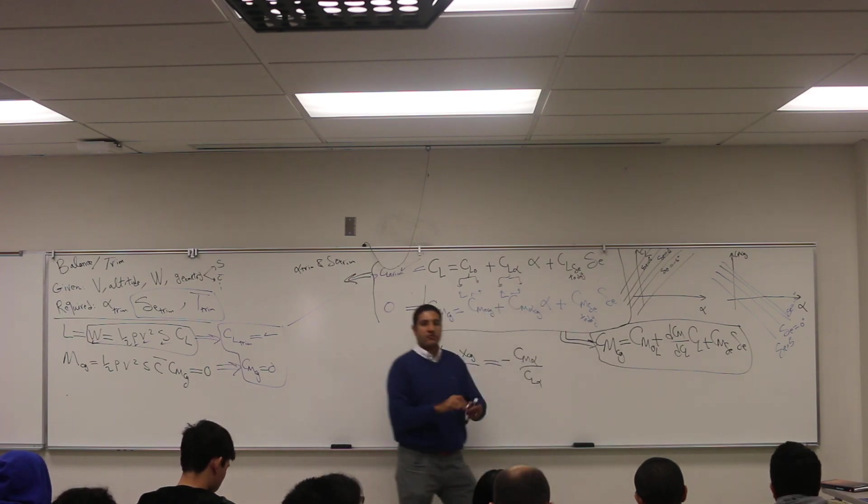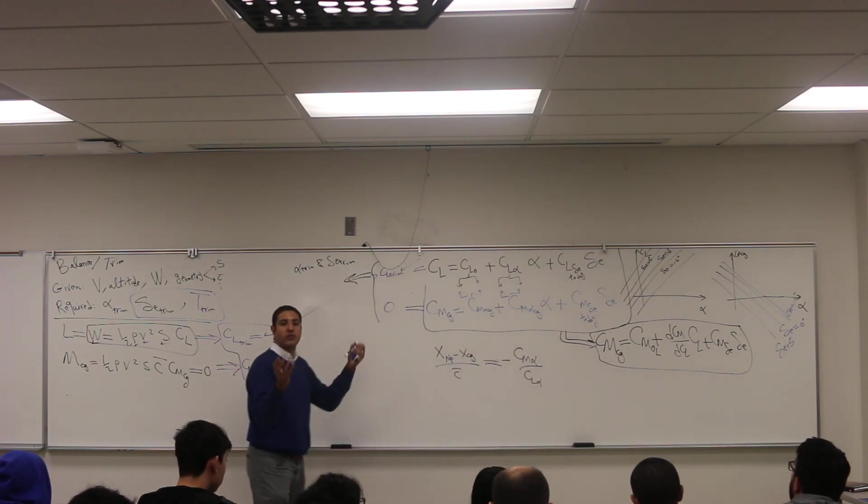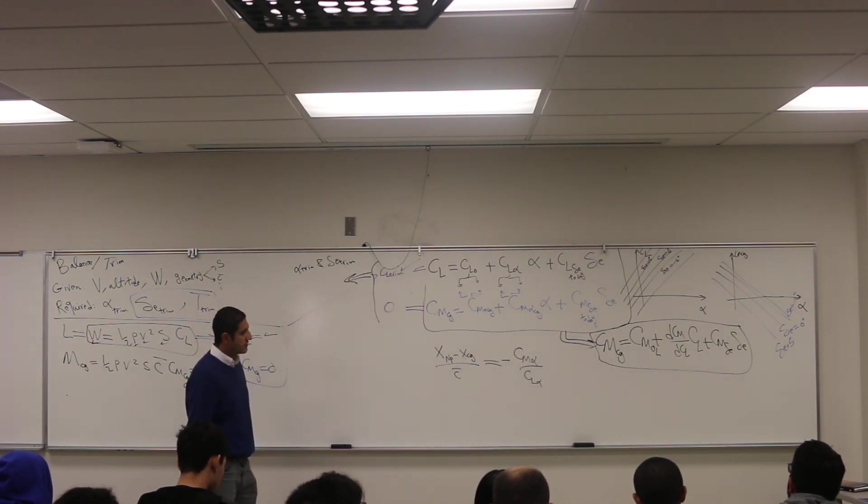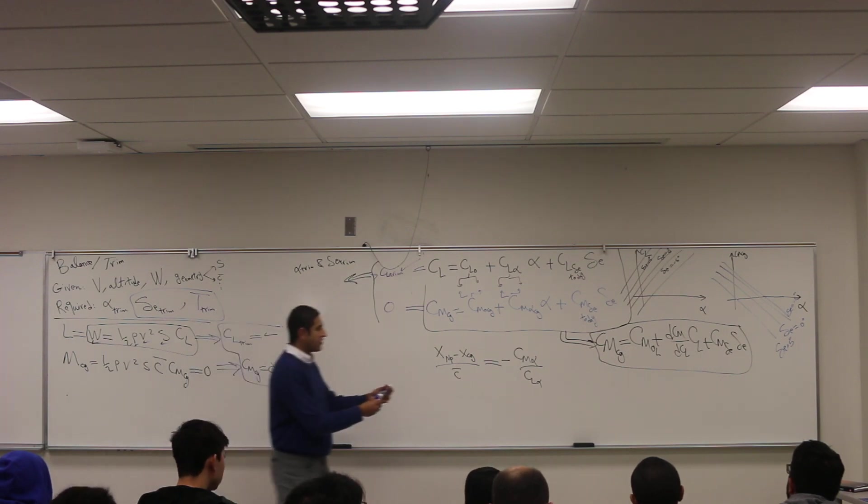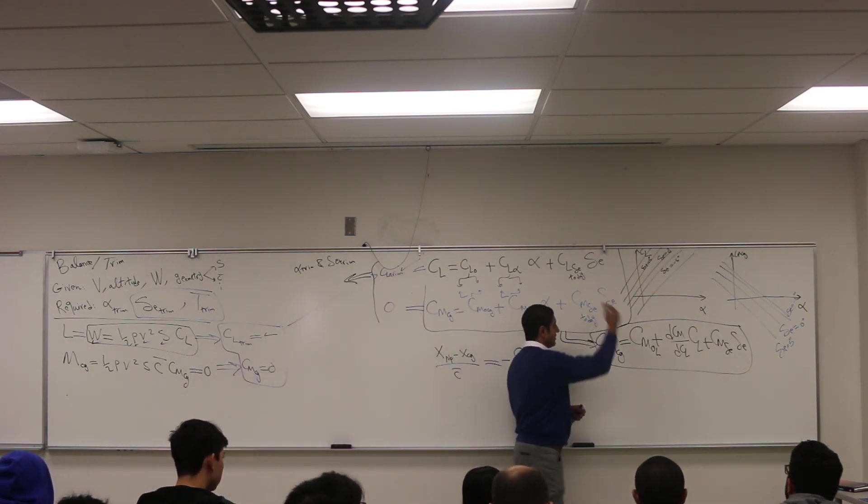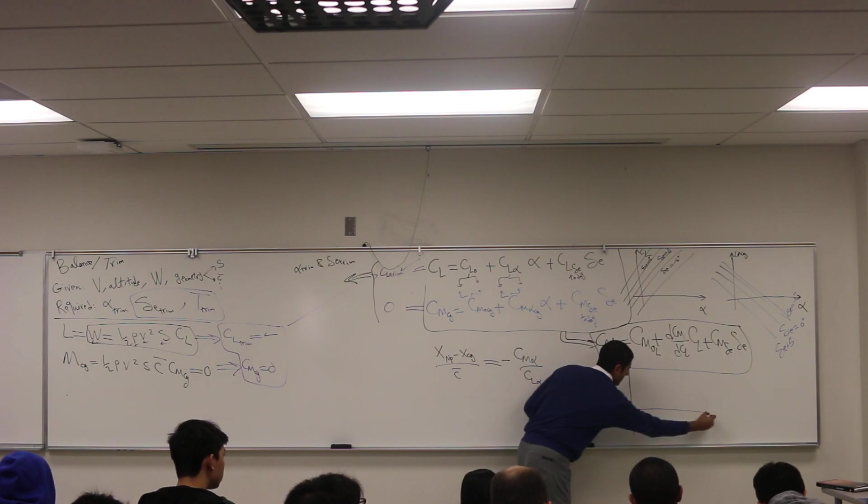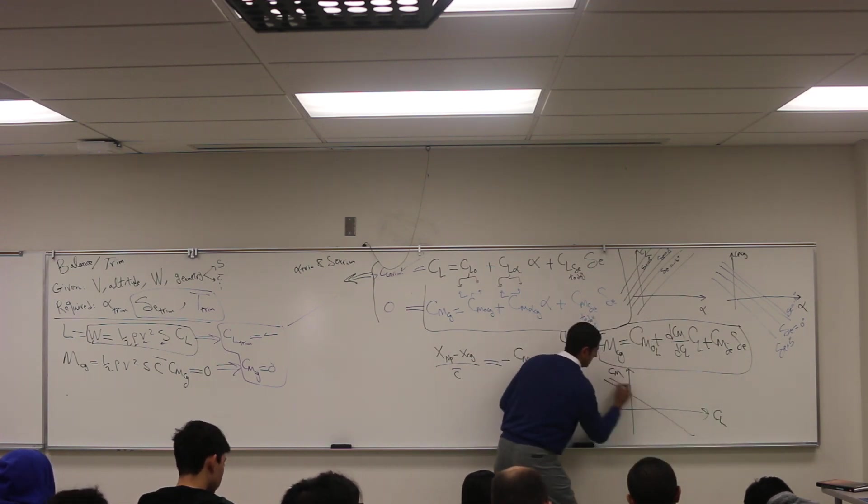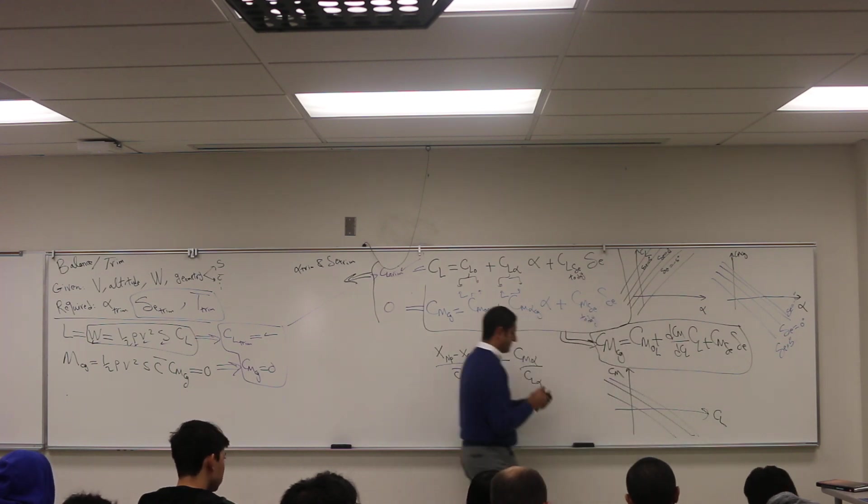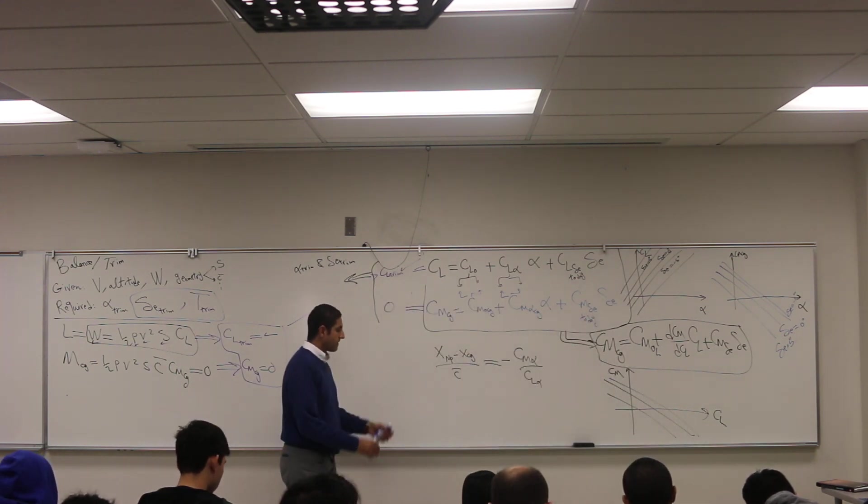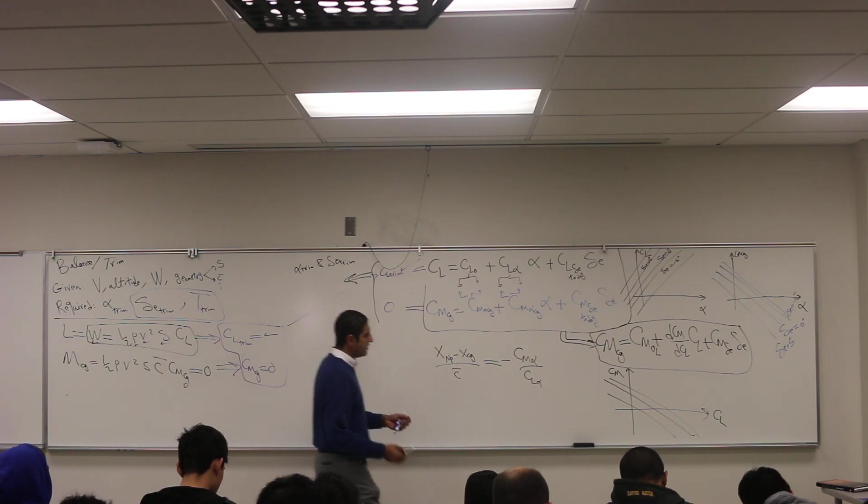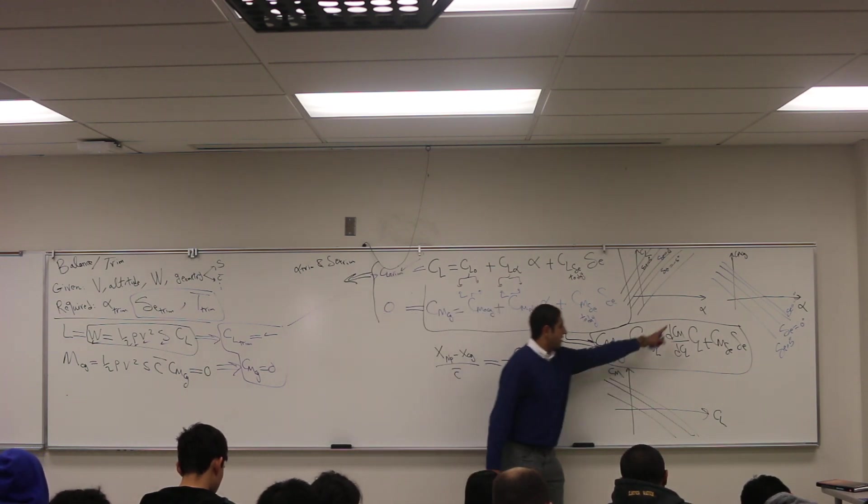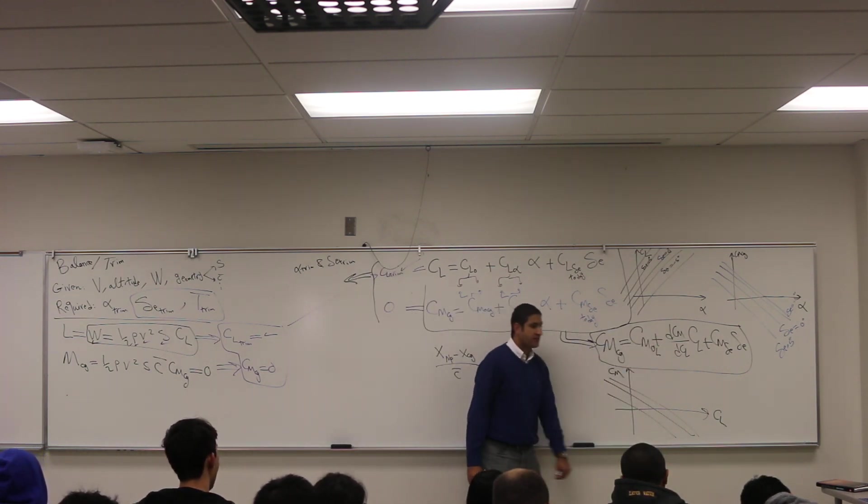Similarly, you can have a figure CM versus CL, something like this. dCM/dCL is the slope of this figure, which is simply CM_alpha over CL_alpha, right? CM_alpha divided by CL_alpha, you get dCM/dCL.